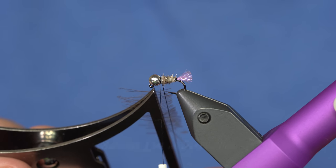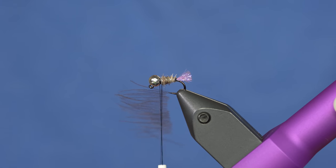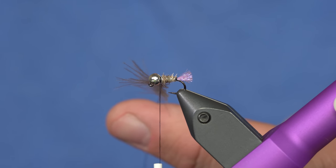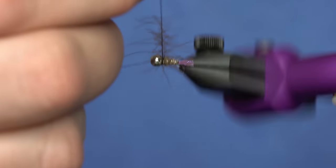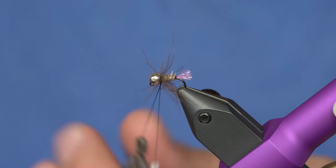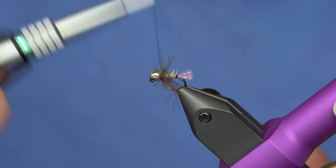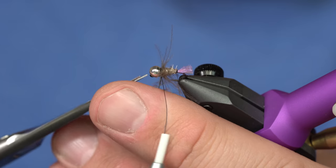I'll build my CDC loop. Once I have it here, I'm just going to give it a few wraps with the rotary vise and trim that off.